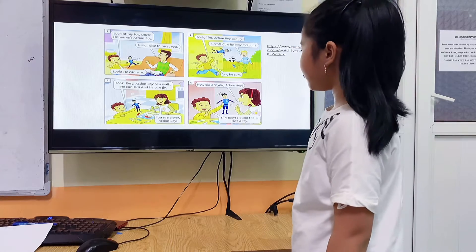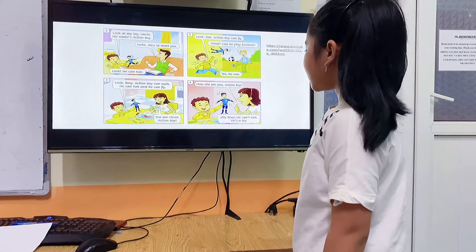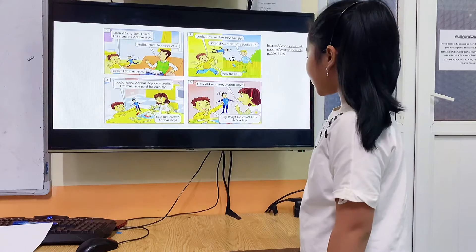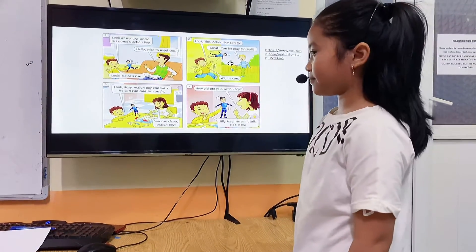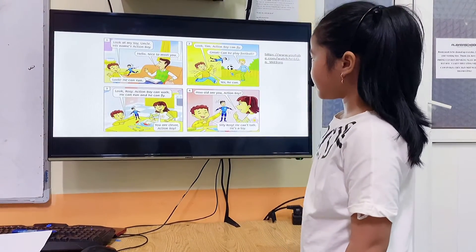You are clever, Action Boy. How old are you, Action Boy? Silly Rosie, he can't talk. He's a toy. Okay, good. He's a toy, right? He's a toy.